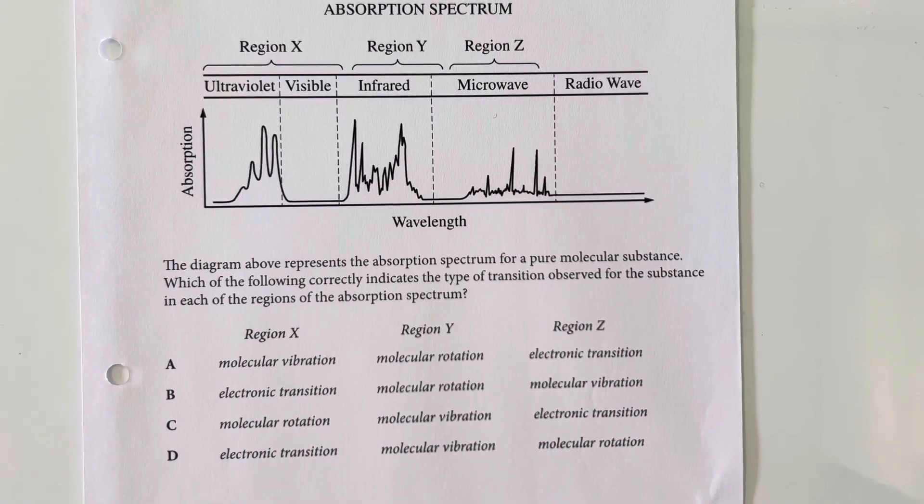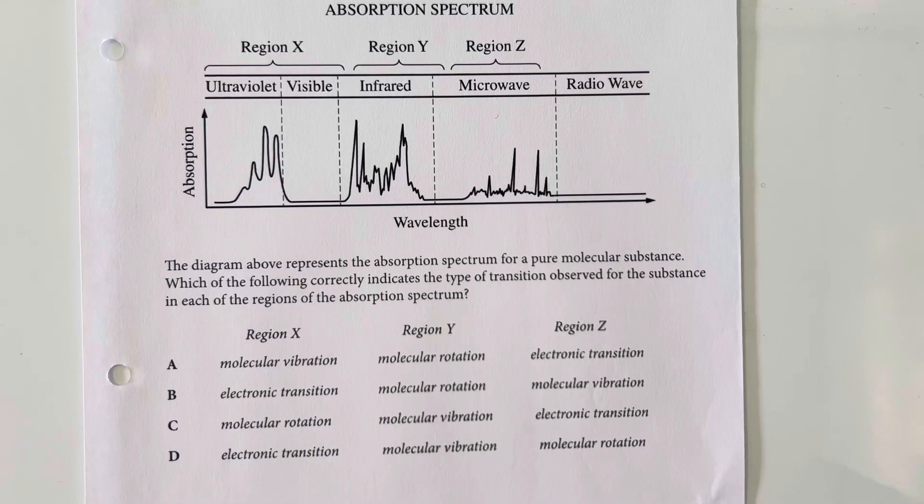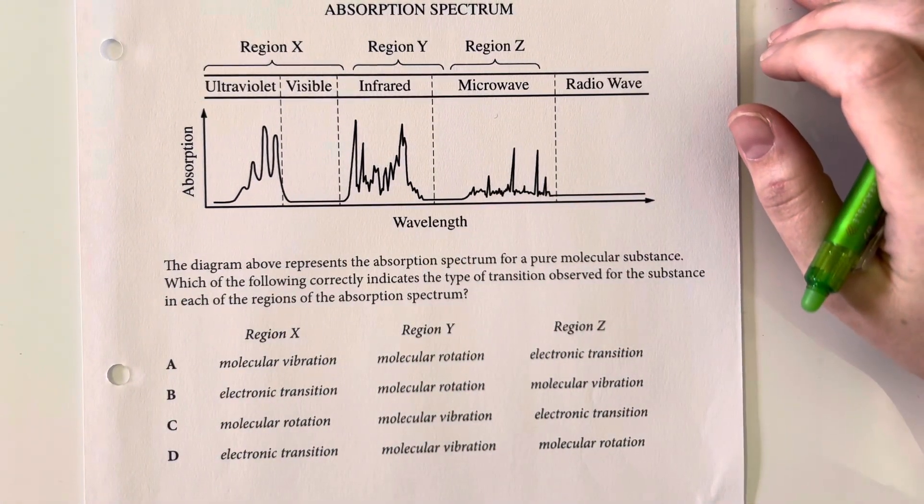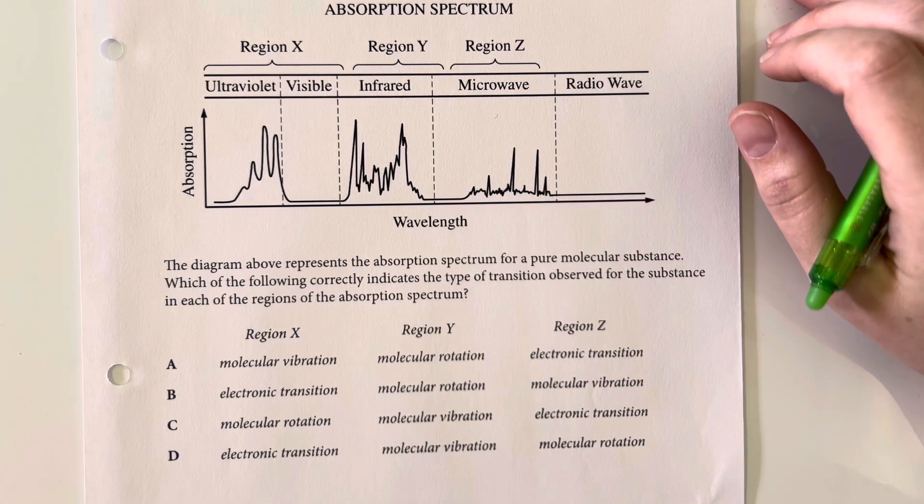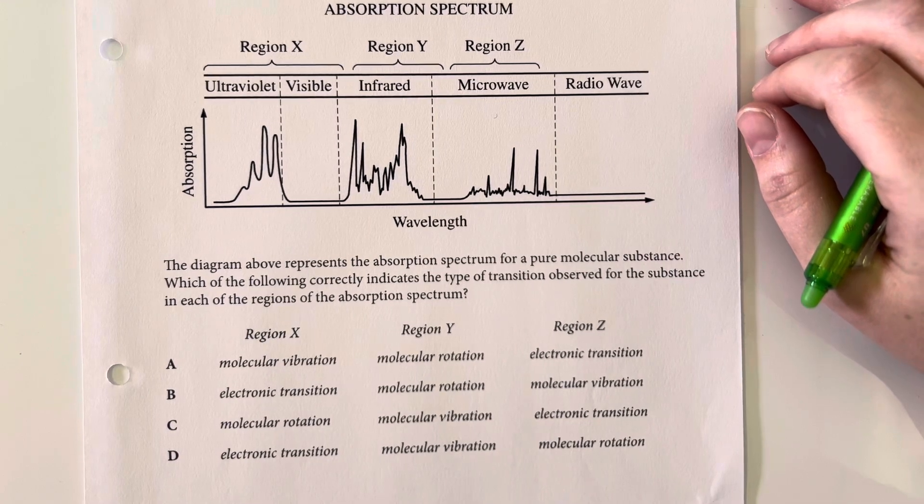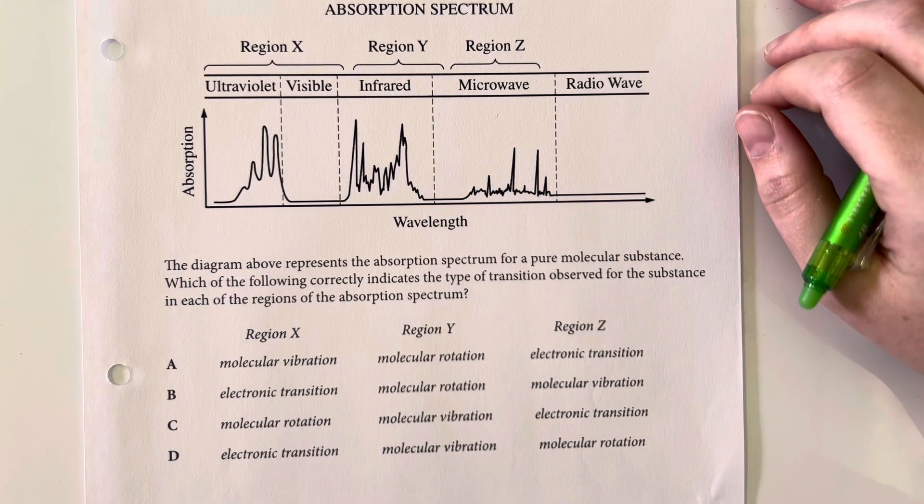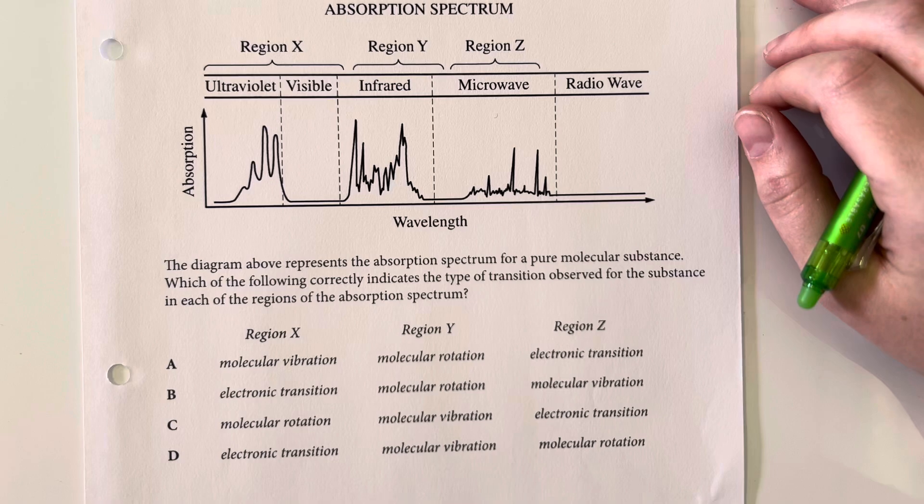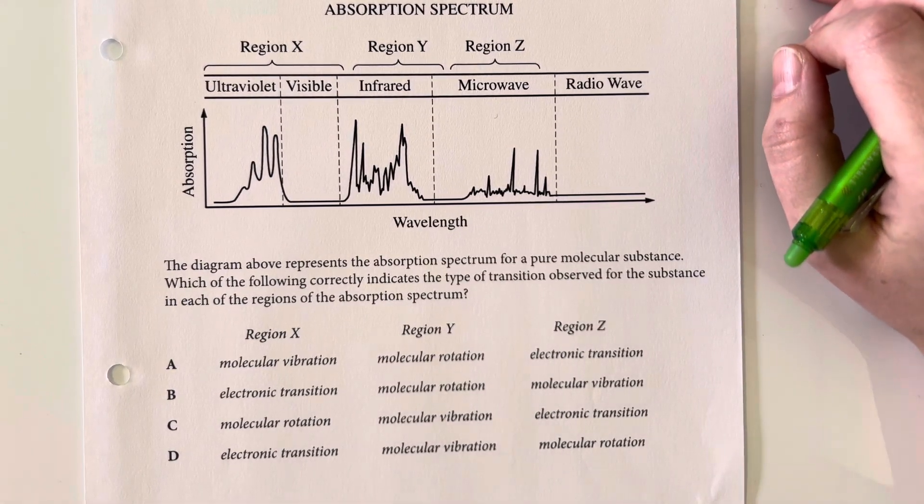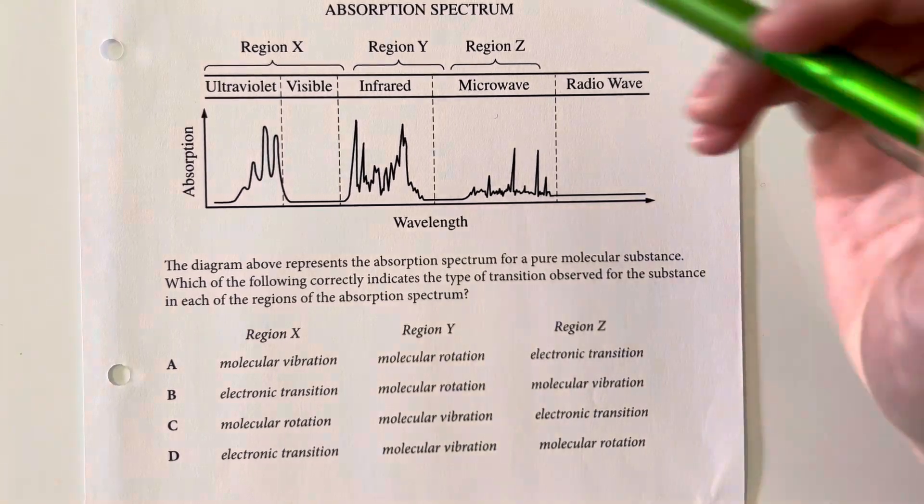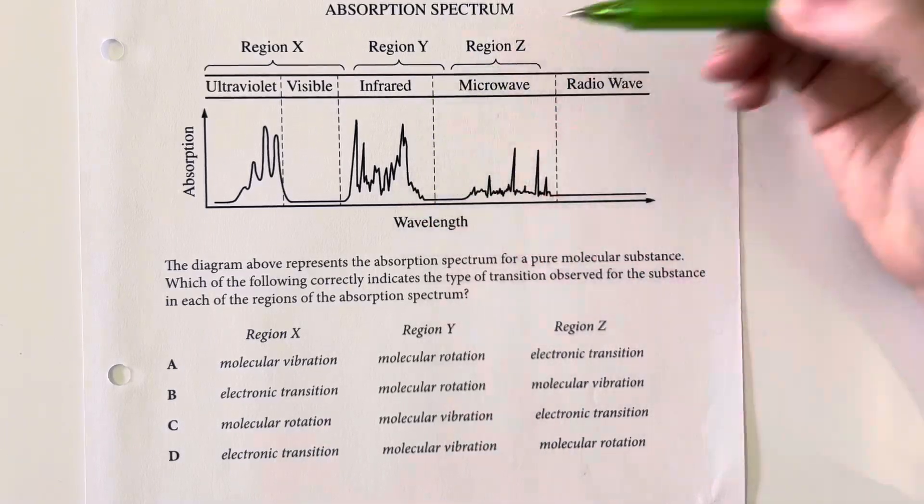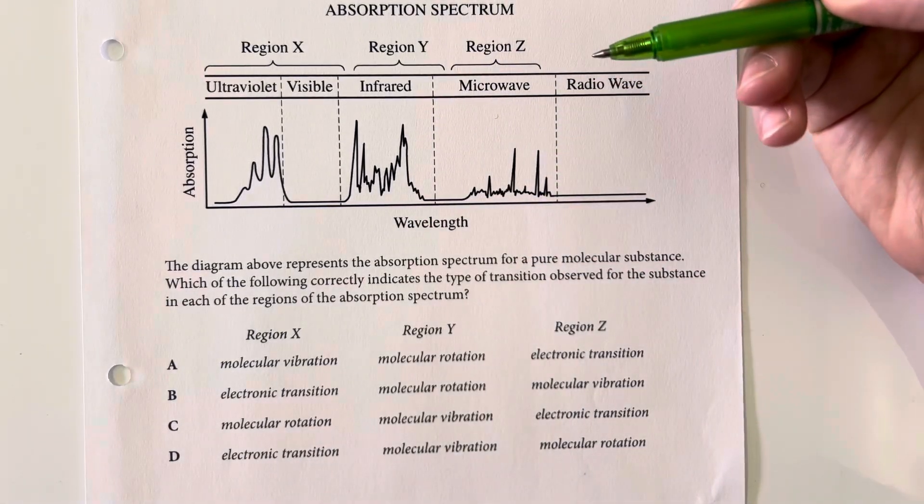Okay, so we see the absorption spectrum of our electromagnetic radiation spectrum. And we are asked, the diagram above represents the absorption spectrum of a pure molecular substance. Which of the following correctly indicates the type of transition observed for the substance in each of the regions of the absorption spectrum? So, we are just being asked, region X, we're dealing with ultraviolet and visible, region Y we're dealing with infrared, and region Z we're dealing with microwave.